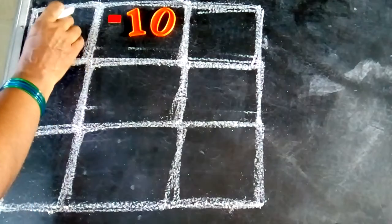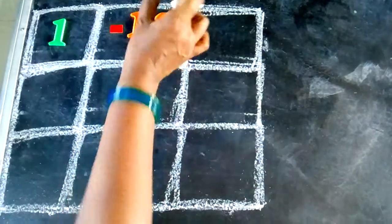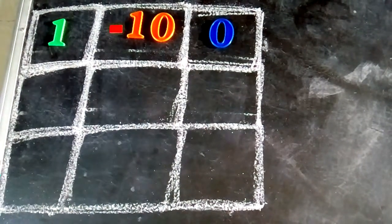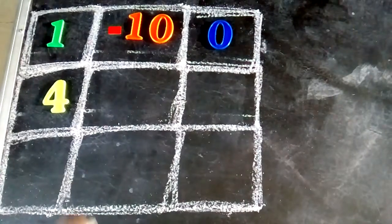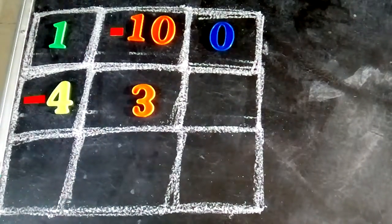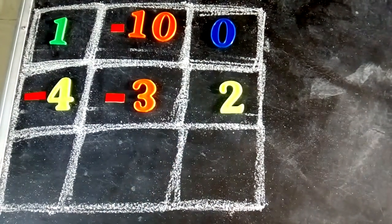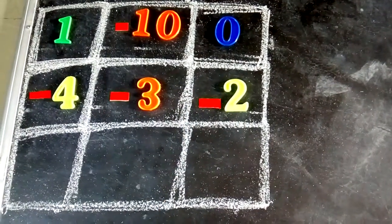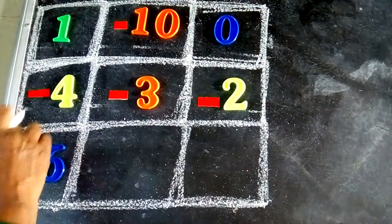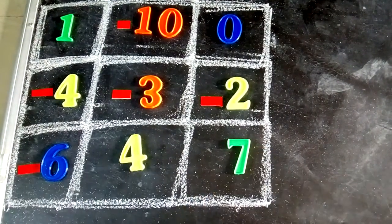First square: 1. Second square: minus 10. Third square: 0. Fourth square: minus 4. Fifth square: minus 3. Sixth square: minus 2. Next: minus 6. Next square: 4. Last one: minus 7.